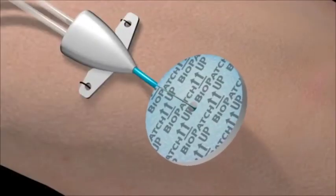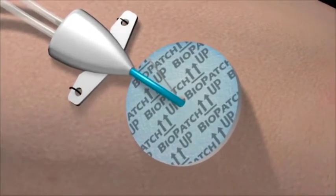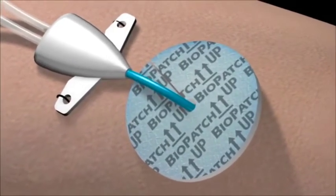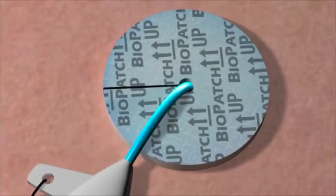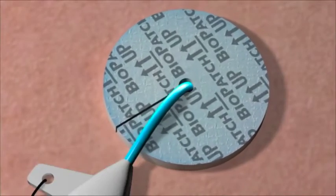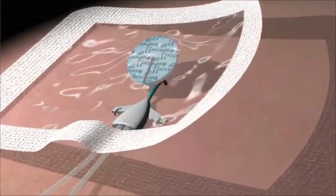Place BioPatch around the catheter or pin site with the CHG impregnated white foam side in direct contact with the patient's skin. Make sure that the BioPatch is not laying on top of the catheter hub. When aligned properly, the pre-cut slit allows for an easy release of the catheter when the transparent film dressing and BioPatch are removed.